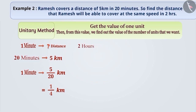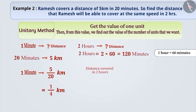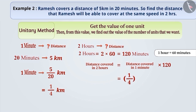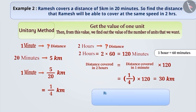Now we have to find the distance he covers in 2 hours. 2 hours is equal to 2 into 60, which is equal to 120 minutes. So the distance covered in 2 hours is equal to the distance covered in 1 minute, that is 1 fourth, multiplied by 120 minutes, which is equal to 30 kilometers. Therefore, Ramesh covers a distance of 30 kilometers in 120 minutes or 2 hours.